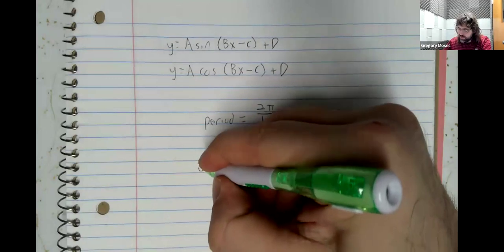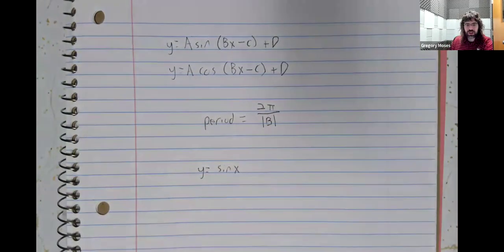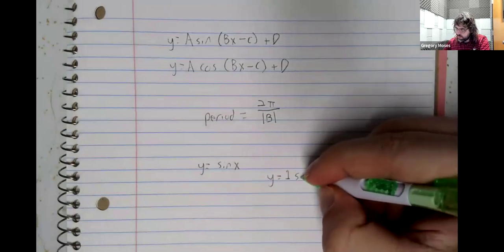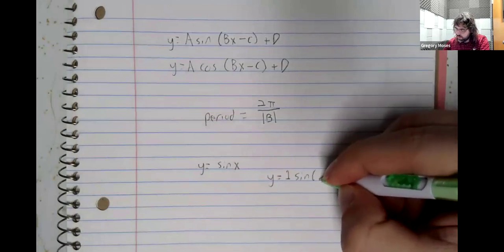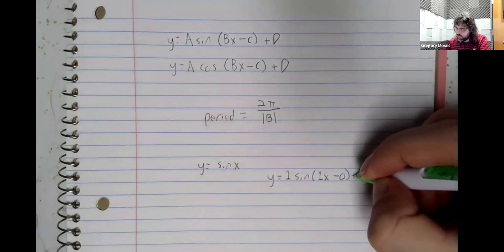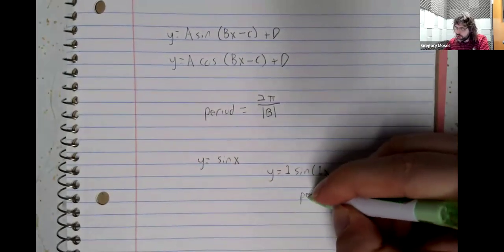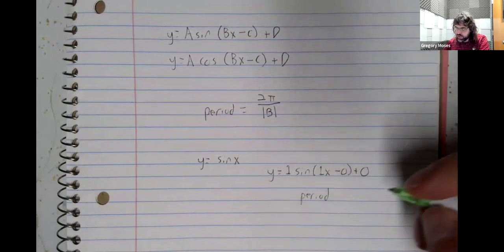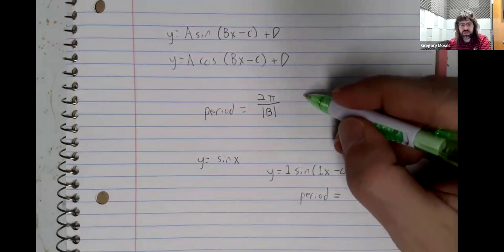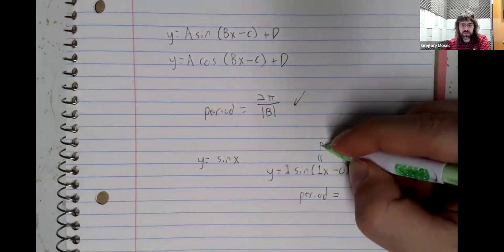So, the standard sine function, you can think of this as being a sinusoidal function. We've already said that its period is 2π. In terms of this formula, B is 1.